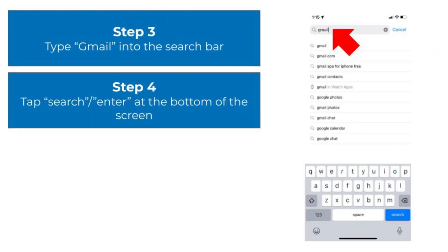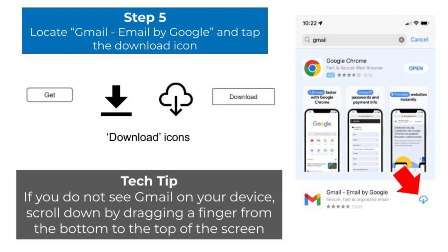Next, tap on the search text box and type in the word Gmail using the keyboard, then tap Search or Enter at the bottom right corner of the keyboard. Next, locate Gmail — Email by Google — and tap on the download icon. The download icon may have a cloud with a downward arrow, but it could also be a box that says Download or Get. If you do not see Gmail on your device, scroll down by dragging a finger from the bottom to the top of the screen. Once the Gmail app is downloaded, you will see it on your home screen.